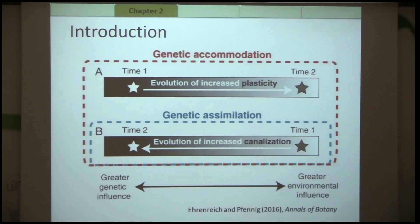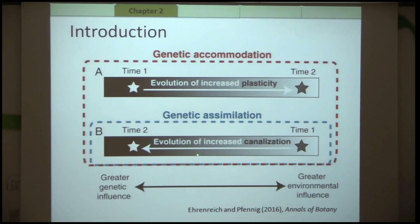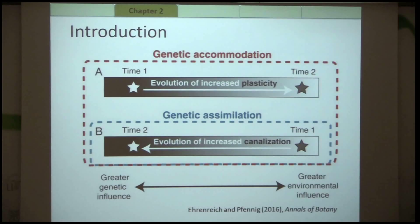No matter whether the amount of plasticity is increased or decreased, animals get genetically accommodated. There is also an extreme version of genetic accommodation called genetic assimilation: if the environmental variability decreases and selection removes the formerly environmentally induced phenotypic trait, then the plasticity will decrease and the animal will go through canalization.